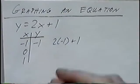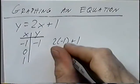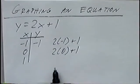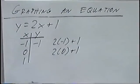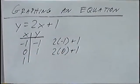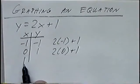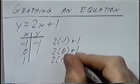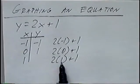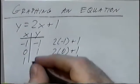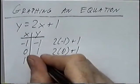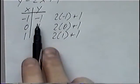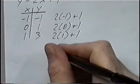Plugging zero into the equation: two times zero plus one — two times zero is zero, plus one is one. The last point uses positive one: two times one plus one — two times one is two, plus one is three. Once we have the t-table with our three points, we can draw an x-y graph to graph this equation.